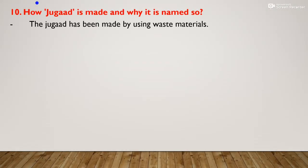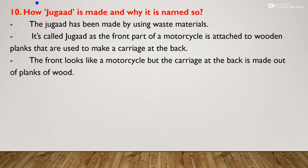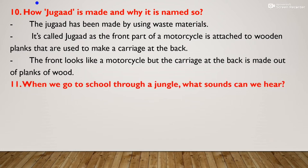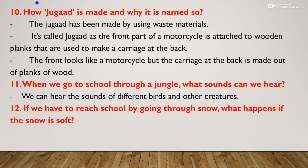How is the jugad made and why is it named so? The jugad is made using waste materials. The front part is from a motorcycle and the back carriage is made from wooden planks. Overall the jugad is made up of waste metal, so it is named jugad. When we go to school through a jungle, what sounds can we hear? We can hear the sounds of different birds and other creatures or wild animals.